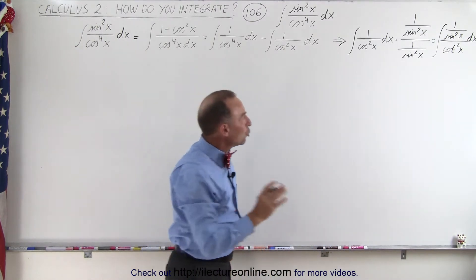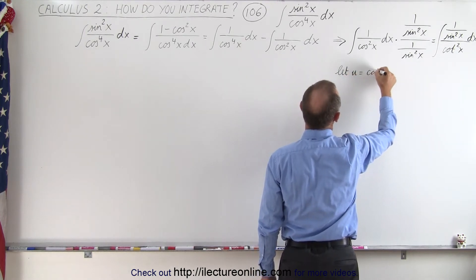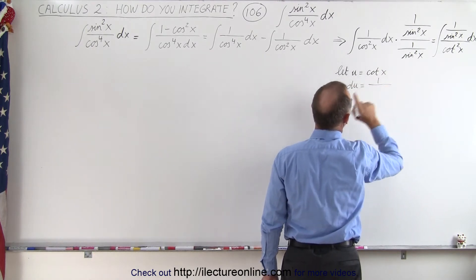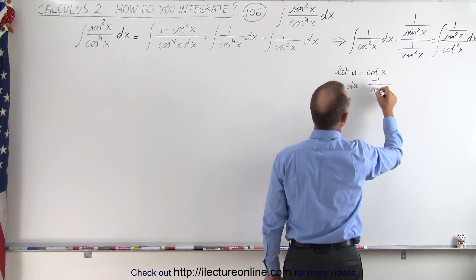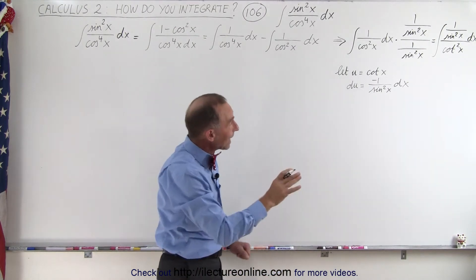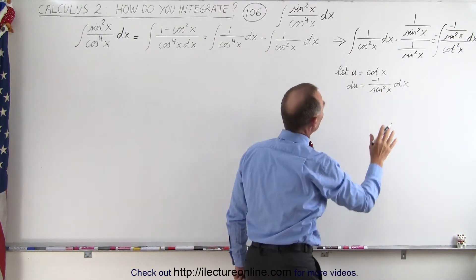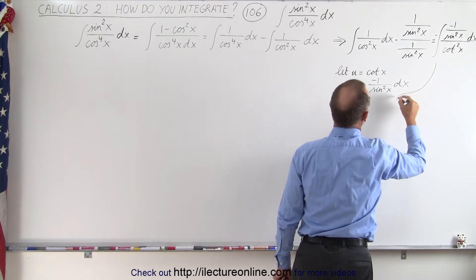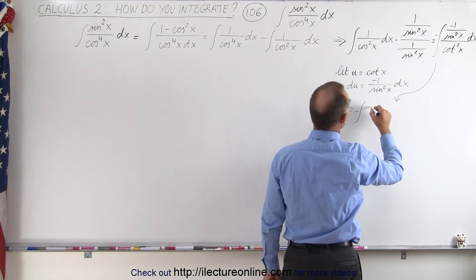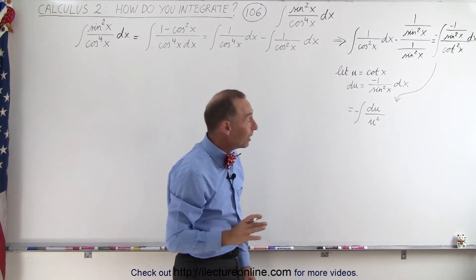Now if we let u equal the cotangent of x, then du will be equal to negative 1 over sine squared of x dx. Notice all we need in the numerator is a negative sign, so we put a negative sign up there and a negative sign in front. This becomes equal to the negative integral of du divided by u squared.